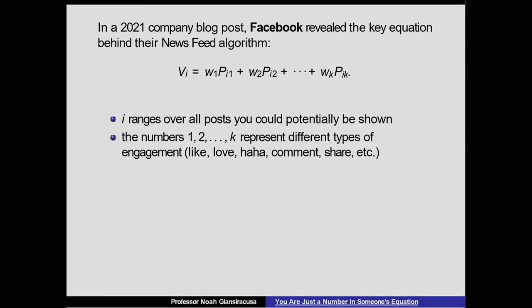What are all the things in the sum? Well, the other number you see there, one, two, three, dot dot dot, all the way up to k, those are the different types of engagement you can do. On Facebook, that means a like or a love, the little heart emoji, a haha, an angry face.